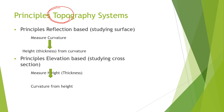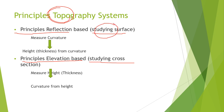Now what are the principles? Two basic principles: one is reflection-based and one is elevation-based. Reflection-based is for studying the surface, and elevation-based is for studying the cross section. Remember the difference — studying the surface is reflection-based and studying the cross section is elevation-based.